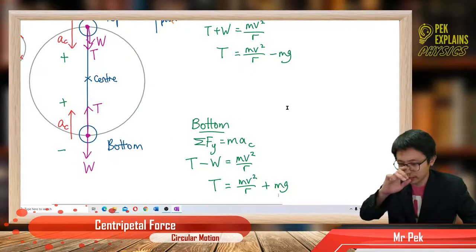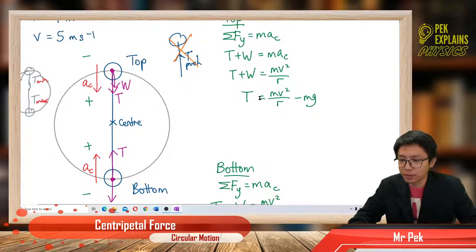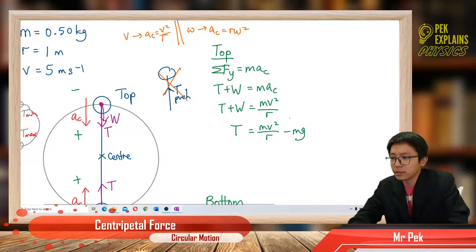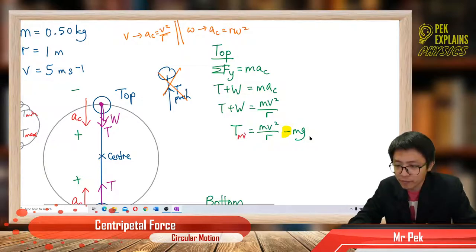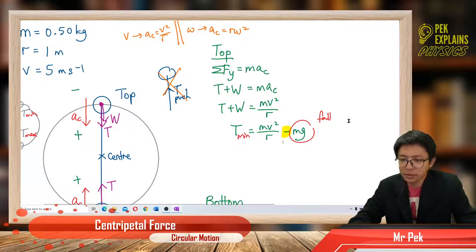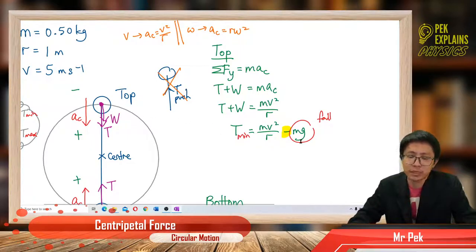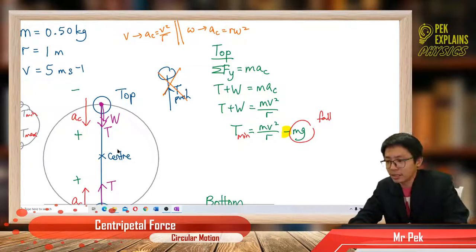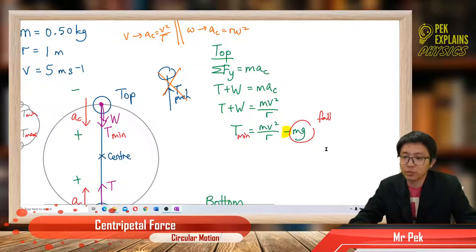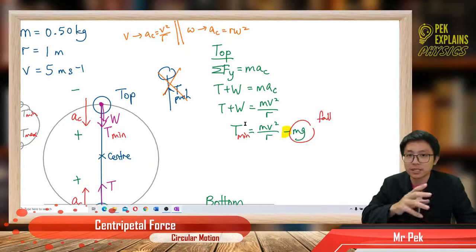Can you see the difference? At the top position, it is minus MG. So when the value is subtracted — MV squared over R minus MG — the tension becomes minimum. The MG represents the object trying to fall down, which makes the string less taut and the tension minimum, because it is subtracted by the weight. At the bottom, it is plus MG, meaning the tension has to overcome the weight. The weight makes the string very taut, so the tension becomes maximum. Always build equations to prove something — don't just talk without proof.